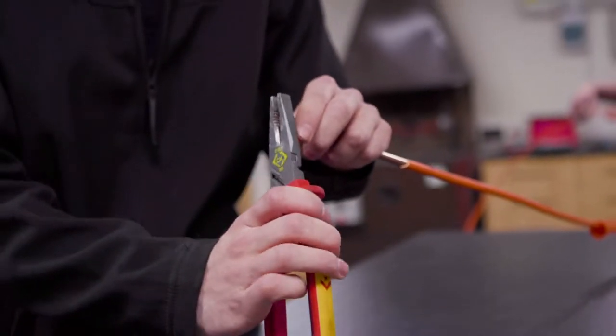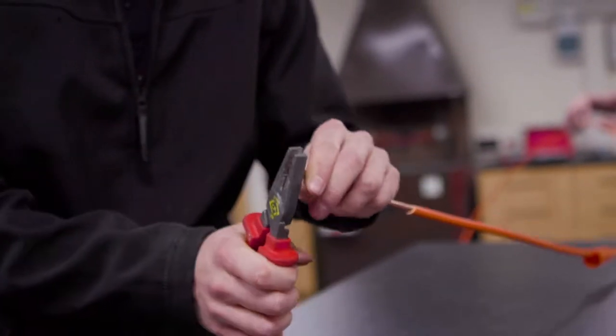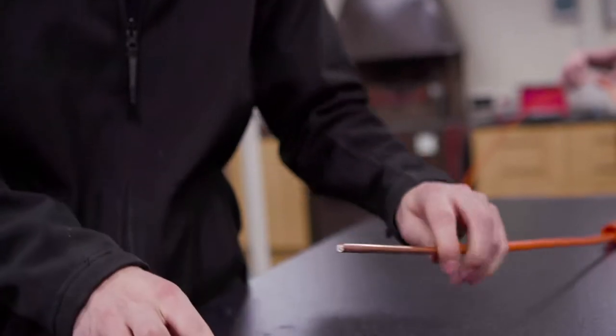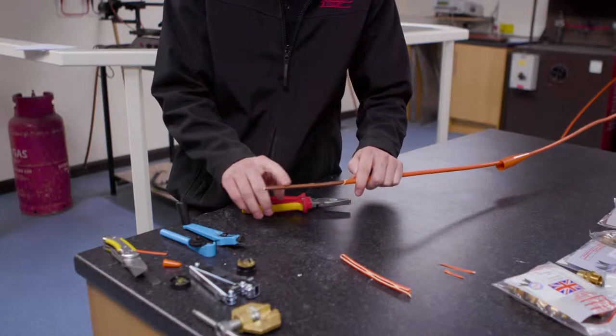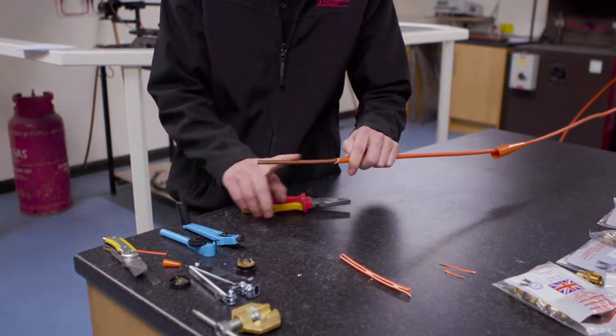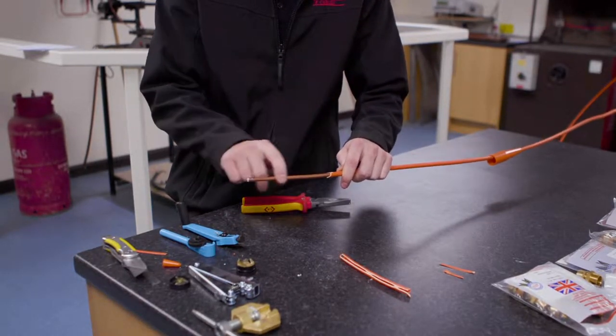Next we'll round the end of the cable using the pliers so it can go into the rotary stripper, and then we'll apply a little bit of grease or Vaseline onto the copper just to help us in the stripping process.